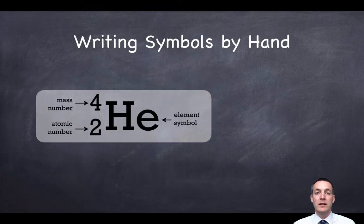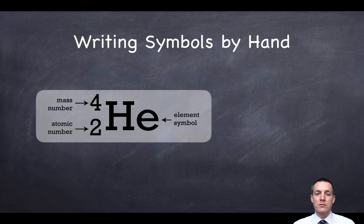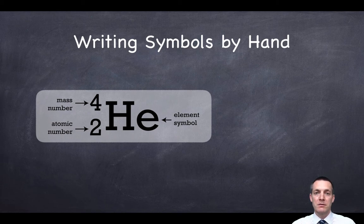If you were to write these numbers by hand — because you'll sometimes see this information outside of the periodic table — things are much simpler, and the two numbers are always found in the same places. Looking at this symbol here for helium, we've got the mass number in the top left and the atomic number in the bottom left. That's always where they're found. So when writing a symbol by hand, the mass number will always be in the top left and the atomic number in the bottom left, followed by the symbol of the element.